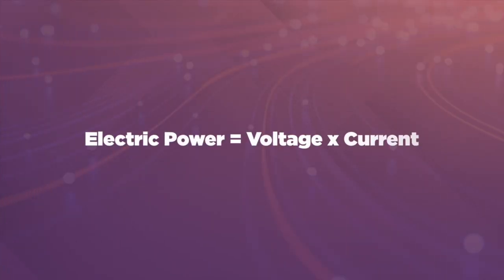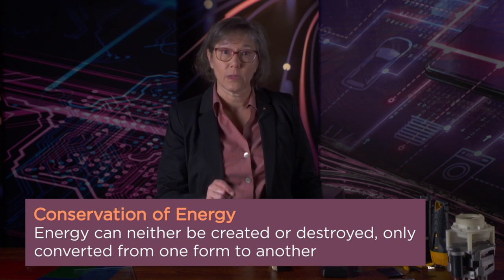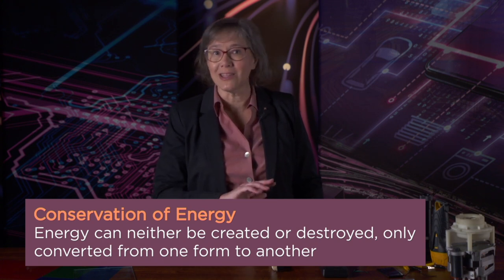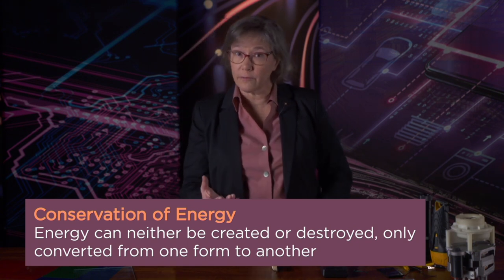Voltage and current are related. What we call electric power is voltage multiplied by current. In order to have electric power available to our plugs, we first have to generate it. Our ability to generate electrical energy really means that we convert it from another form of energy. This arises from a very important physical law known as conservation of energy, which tells us that energy can neither be created nor destroyed, only converted from one form to another.